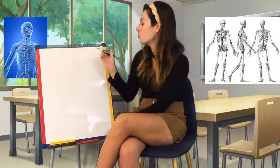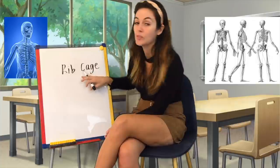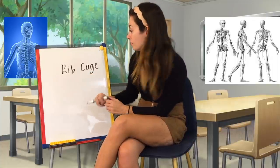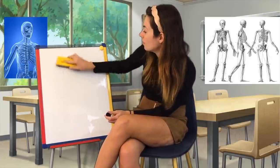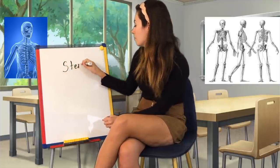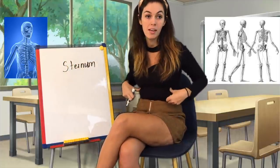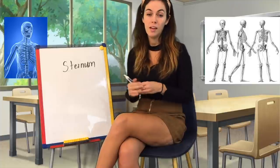Moving on from the arms, we'll talk about the rib cage, which protects your lungs and is connected to the clavicle. It offers protection for your lungs. And then we have the sternum — the bone that runs between the ribs and connects all of the rib cage together.